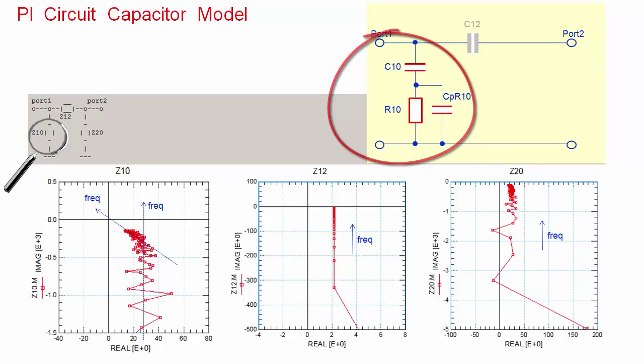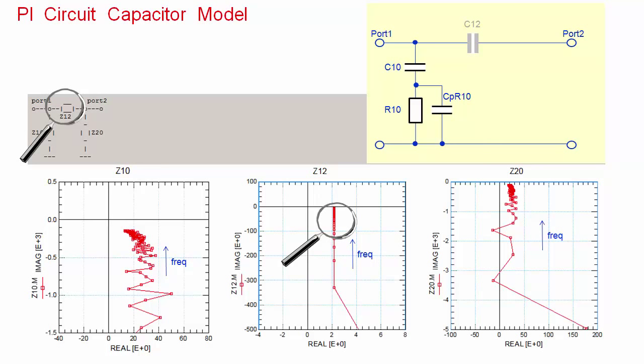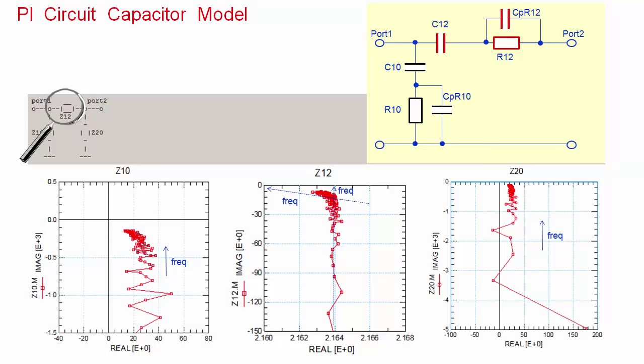Next comes the modeling of the branch between port 1 and port 2, the transfer impedance Z12. We zoom in and identify again a capacitor in series with a frequency shorted resistor. And so I add the components R12, C12 and CPR12 to the SPICE netlist.